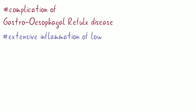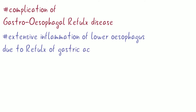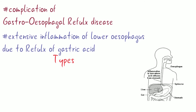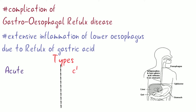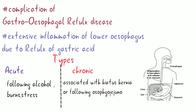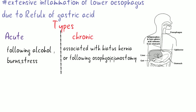There are two types of reflux esophagitis: acute and chronic. Acute is associated with following alcohol, burns, and stress. Chronic is associated with hiatus hernia or following esophagogastrostomy.